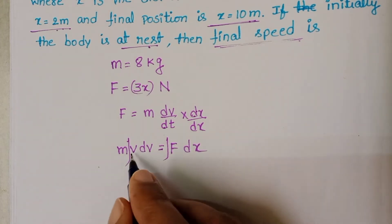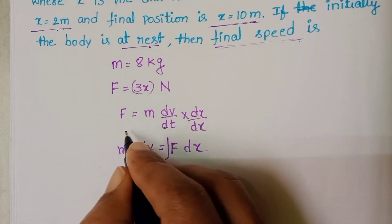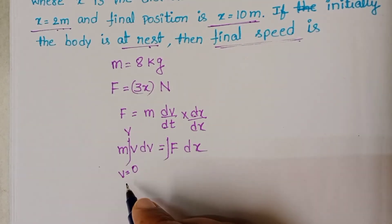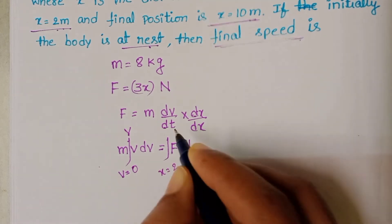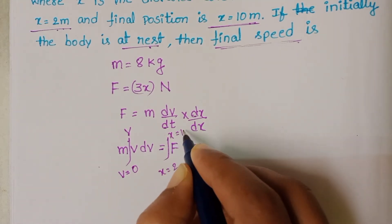Here limits, initially body is at rest position, so initial velocity is 0. Final velocity let it be v. And initial position is at 2 meter and finally it is at 10 meter.